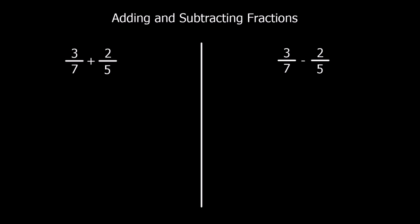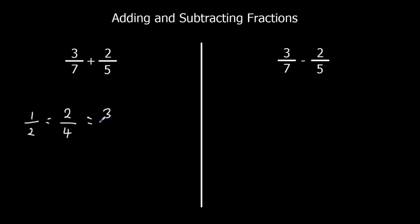But here's an example where we haven't got the same denominator. This one's in sevenths — 3 sevenths of something — plus 2 fifths of something. We can't really add sevenths to fifths, so we have to change it first. What we use here is something called equivalent fractions. So if I add half of something, that's exactly the same as having 2 quarters of it, or 3 sixths.